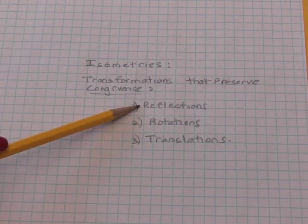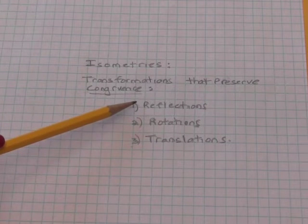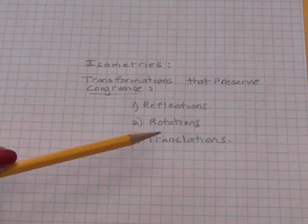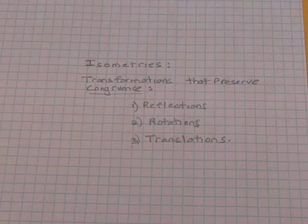When you reflect an object, you produce a congruent image. When you rotate a figure, you produce a congruent image, and when you translate a figure, you produce a congruent image.